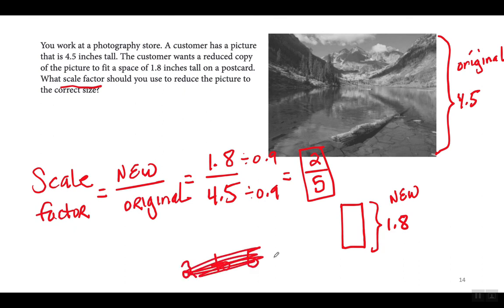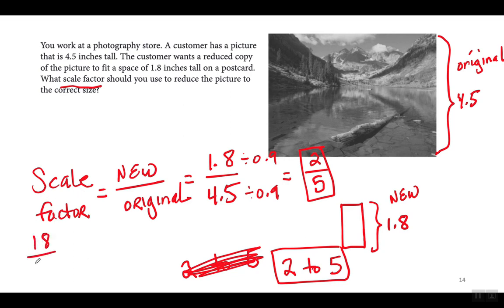You could also write it as 2 over 5. If the 0.9 confuses you, ignore the decimal points — think of it as 18 over 45. Since both are divisible by 9, you get 2 over 5. For 1.8 and 4.5, you divide by 0.9 to simplify. On the homework it's likely a similar type of number, so just think about what you divide by to reduce the fraction.